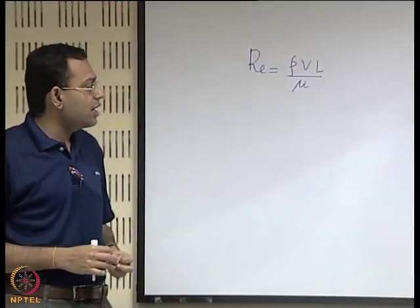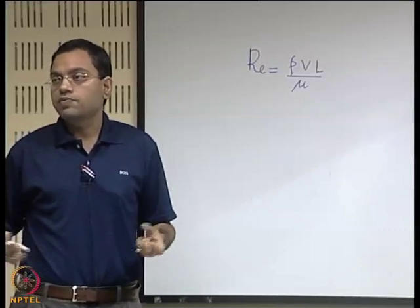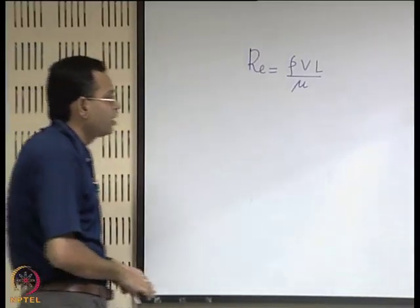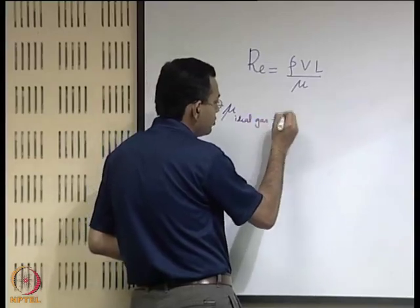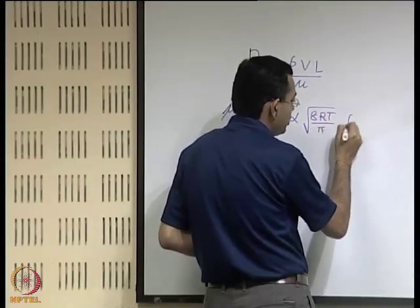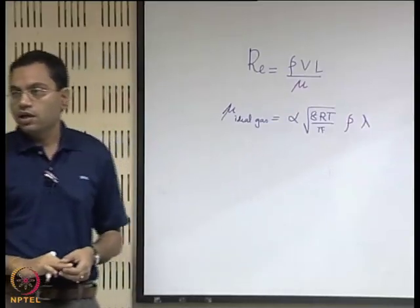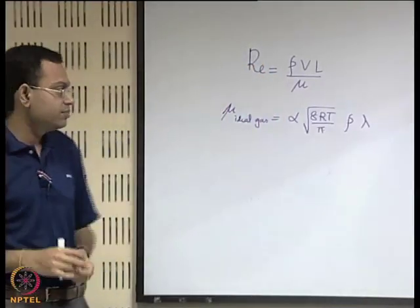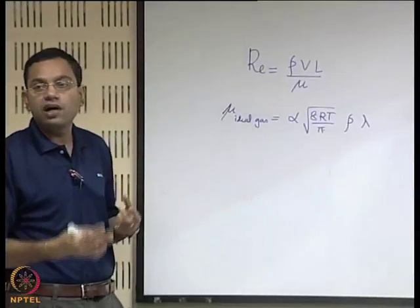Let us try to develop an interrelationship between these three non-dimensional numbers. It is not possible for the most general case, but perhaps for the simplest case — the ideal gas. We recall the viscosity expression for the ideal gas that we derived: mu equals some alpha times the square root of 8RT/pi, times rho times lambda. This alpha is typically a fractional number like 1/6, so for this scaling estimation its exact value is not so important.